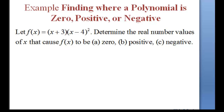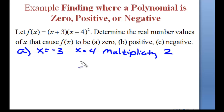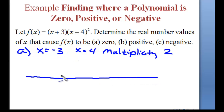In this particular case, we know the polynomial is going to be 0 when x equals negative 3, and when x equals 4, and that's a multiplicity of 2. To figure out when it is positive and negative, we're going to make what's called a sign chart. We start off by drawing a line and filling in our zeros — at x equals negative 3 and x equals 4.